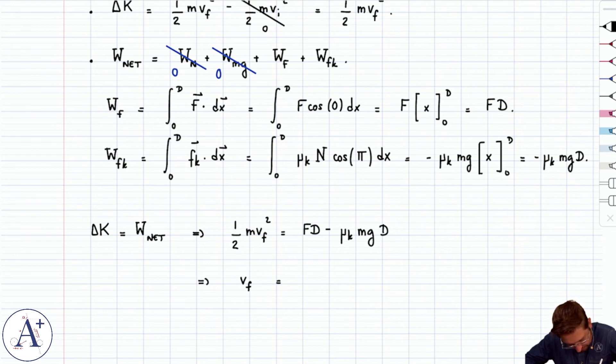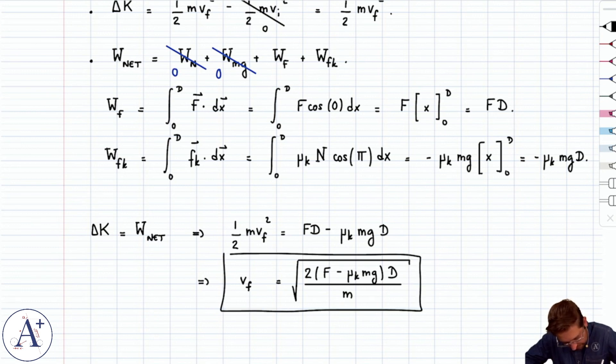So v final is going to be, now we're going to multiply by two. I'm going to factor out D. Divide by m. And then square root everything. And we want the speed anyway, so we're just going to keep the positive root. So this is v final.